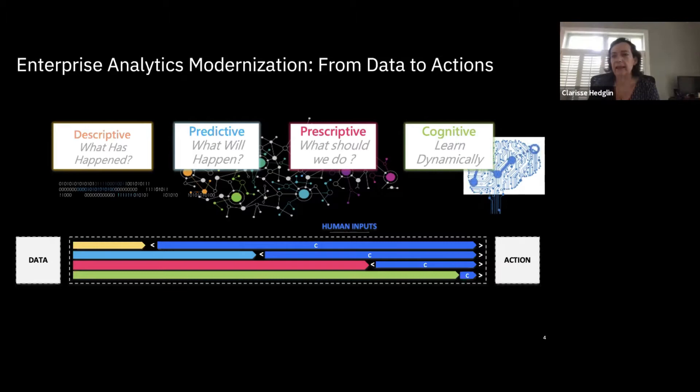The idea is to go from something that's very descriptive and static in terms of what has happened, to coming up with predictive models of what will happen, that drive into prescriptive models of what we should do. And finally, in this cognitive era, what can we learn dynamically — going from data to action and reducing the amount of human input, having more of the system guide us to the right decisions based on data insights.